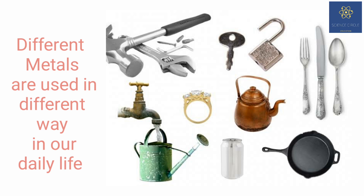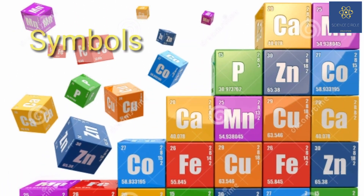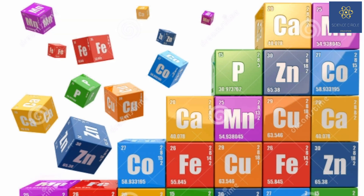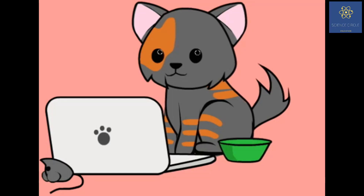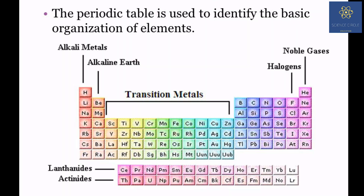In our daily life we can see a large number of metals which are used for various purposes. The periodic table includes a variety of metals such as alkali metals, transition metals, alkaline earth metals, and a few more.